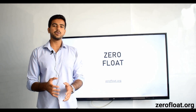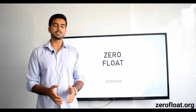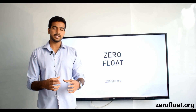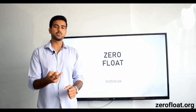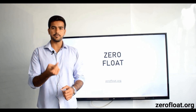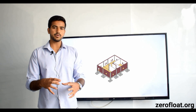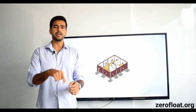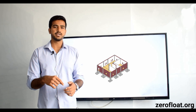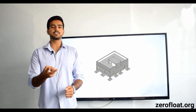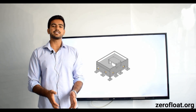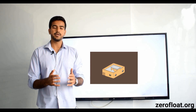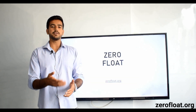Let me tell you how we have made this course for you. First, we took a building. This building has two levels. The first level is the ground floor, which has some rooms and internal finishes. The second level is the terrace, which has some finishes, and the building itself has some finishes.